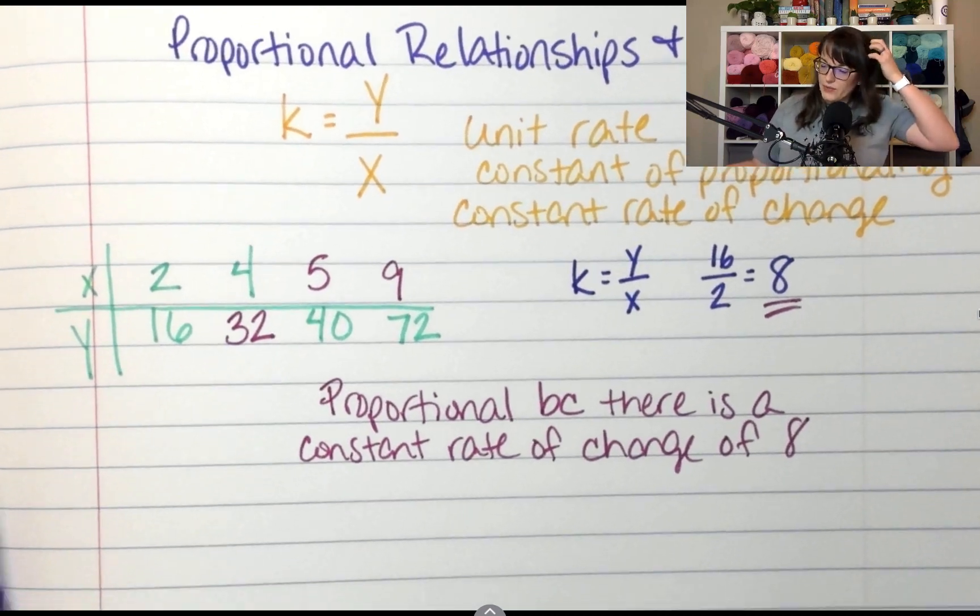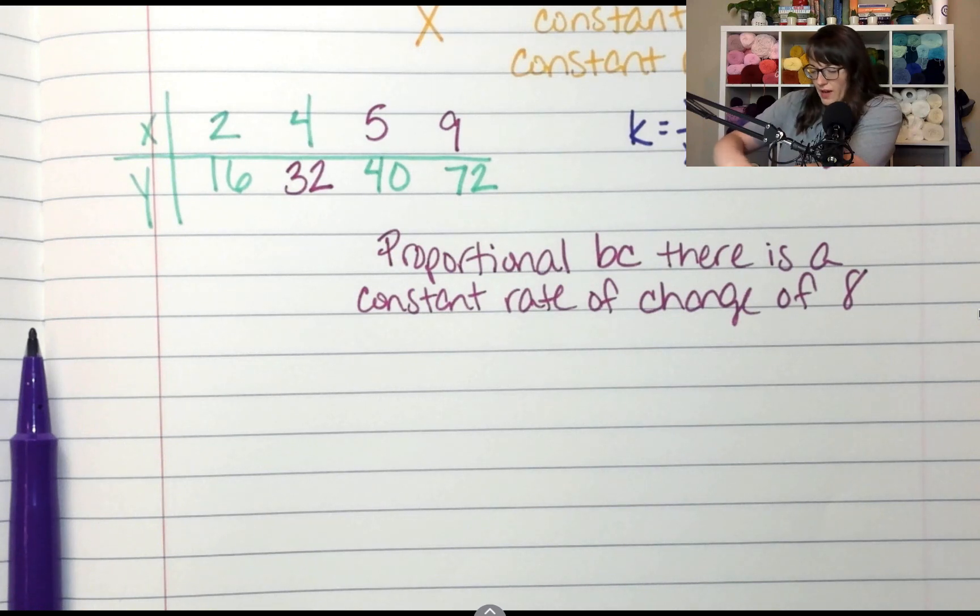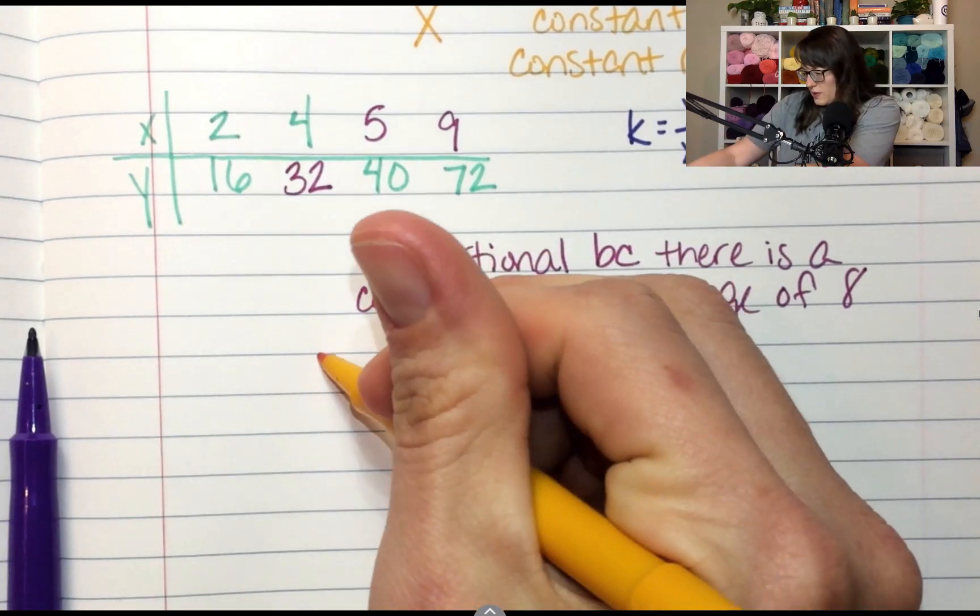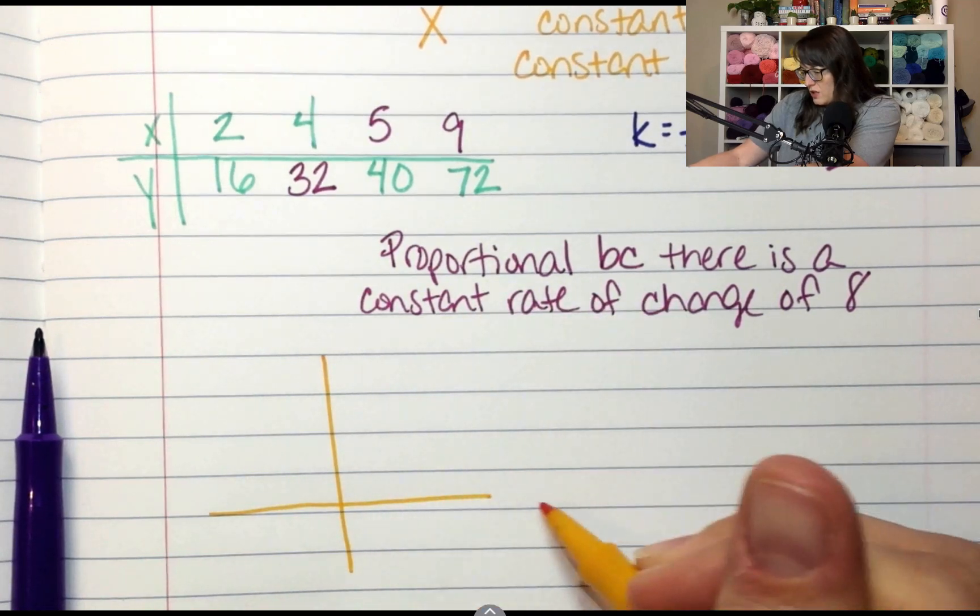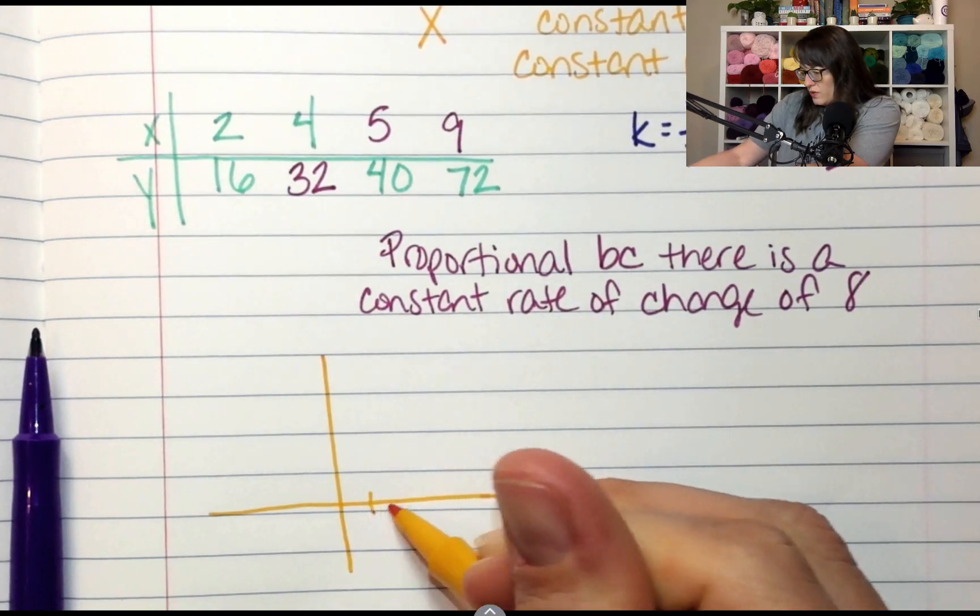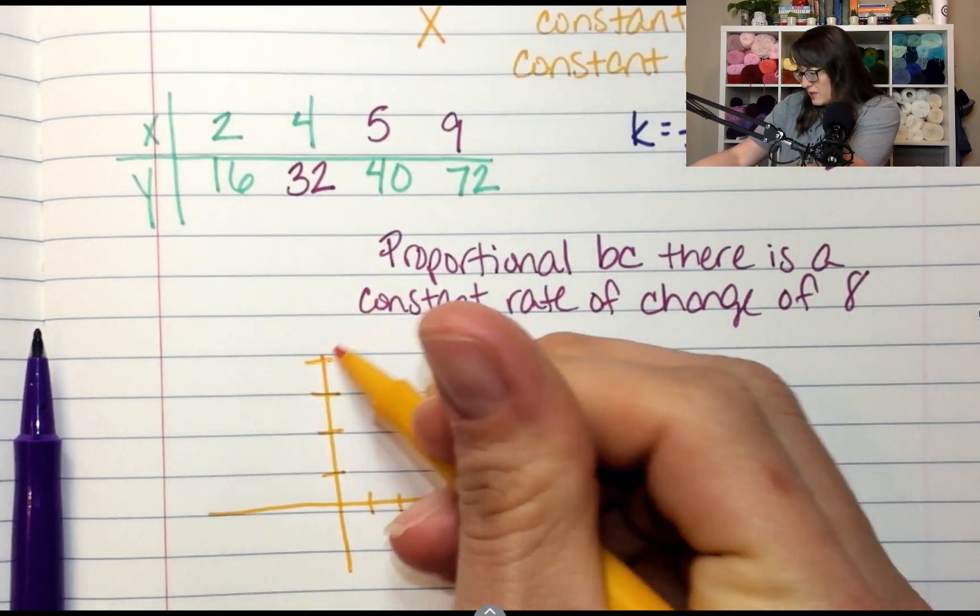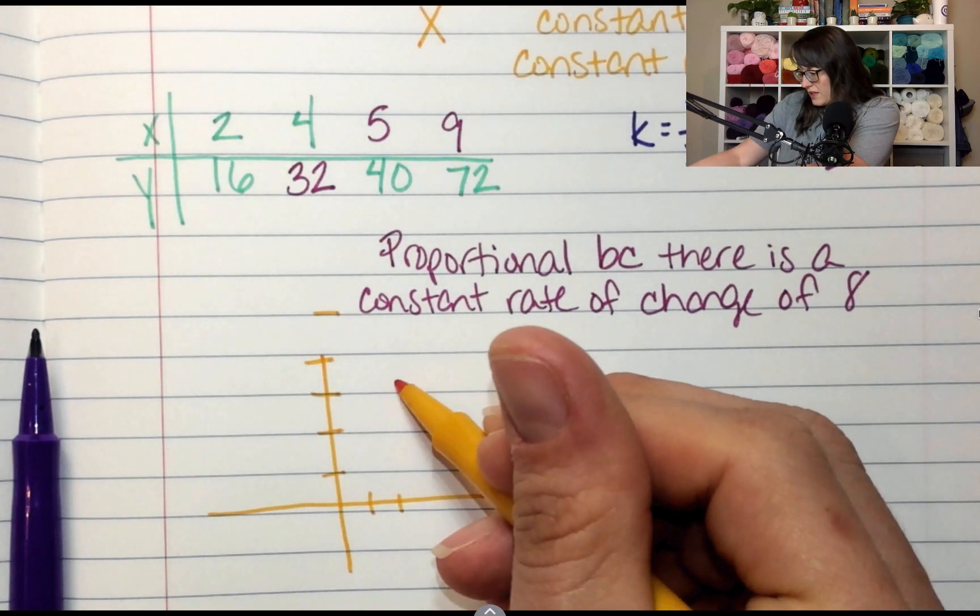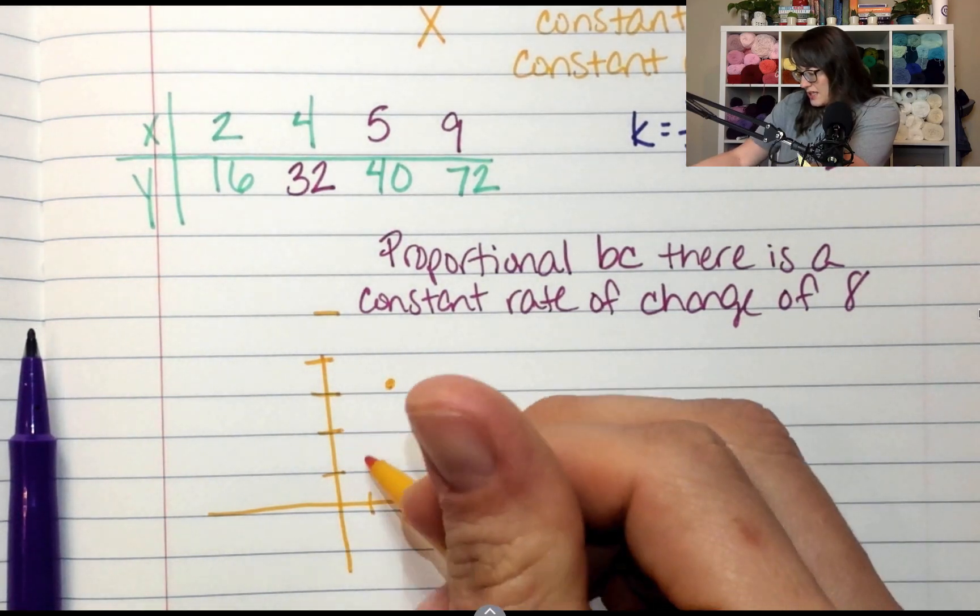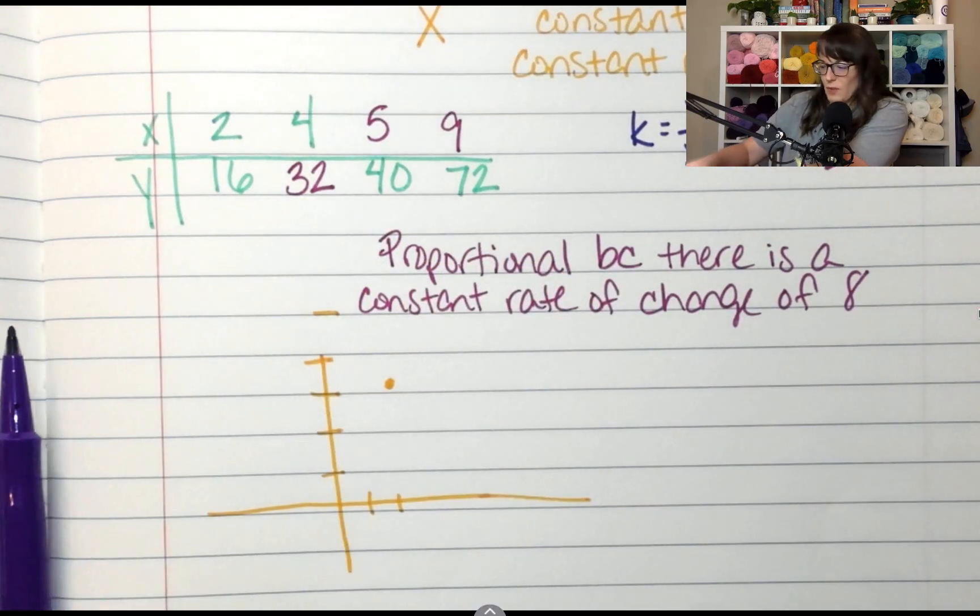Now what if I graphed this relationship? I'm not going to graph all of it, but what if I graphed a little bit of it? So let's throw this up. Maybe like this. So 2 is 16. Let's say this is 5, 10, 15, 20, 25. So 2 is 16, 5, 10, 15 right here. 2 is 16. 4 is 32. Let's go backwards. What would 0 be?